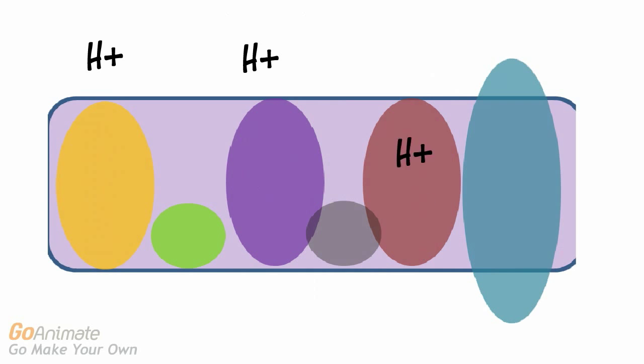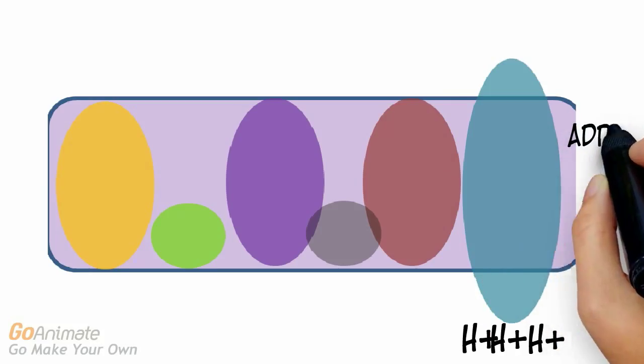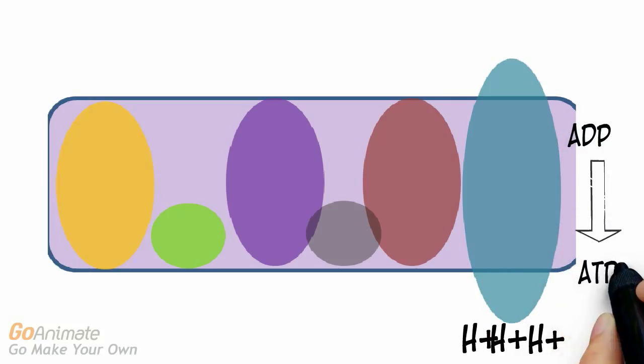The protein complexes work to move hydrogen ions from the matrix to the intramembranous space. The last complex uses the hydrogen or proton gradient to make ATP by adding a phosphate to ADP by phosphorylation.